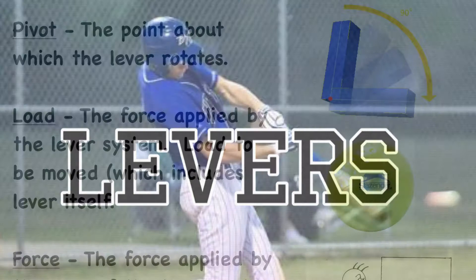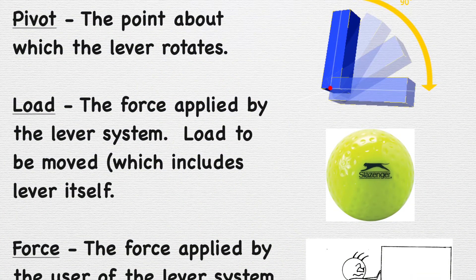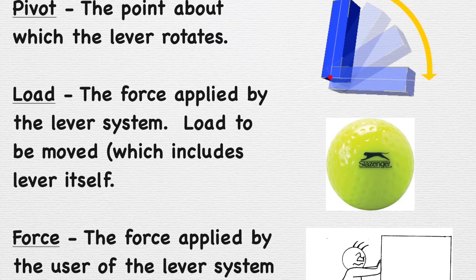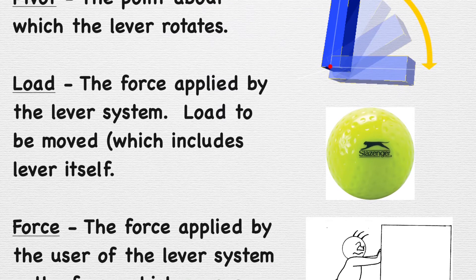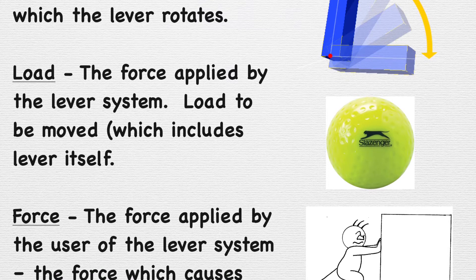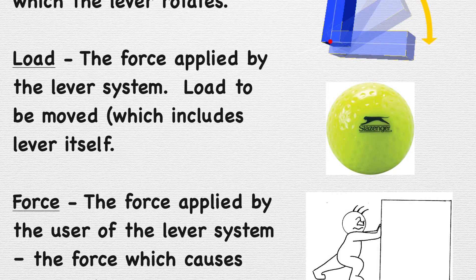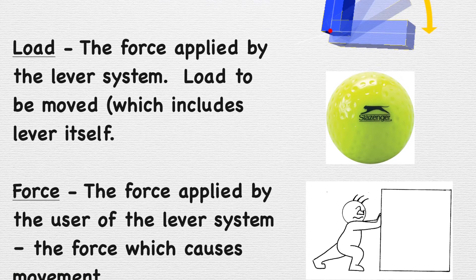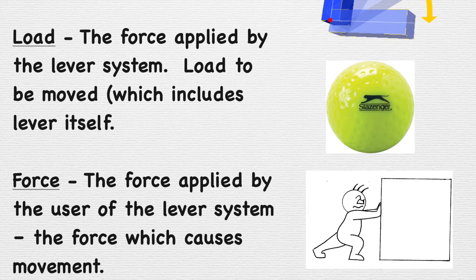Levers. Within a lever, there are three components. One: the pivot, which is the point at which the lever rotates. Two: the load, which is the force applied by the lever system — the load to be moved, including the lever itself. And finally, the force — the force applied by the lever system which causes the movement.